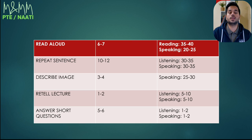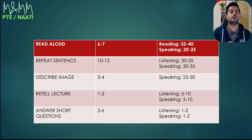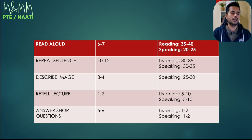Followed by describe image. This is an important topic, but just in the speaking module it gives you about 25 to 30 marks out of 90. Just memorizing the template, putting in some keywords, and following the strategy we've shared in our describe image video — you should be getting a perfect score in that. Perfecting this topic will gain you about 25 to 30 marks in speaking by itself.